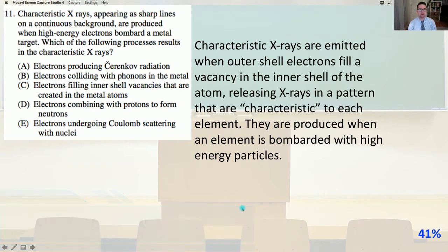Characteristic X-rays appearing as sharp lines on a continuous background are produced when high energy electrons bombard a metal target. Which of the following processes results in the characteristic X-rays?